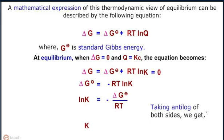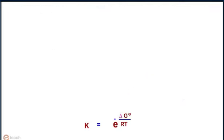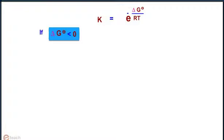Taking anti-log of both sides, we get K equals e to the power minus delta G° upon RT. If delta G° is less than zero, minus delta G° upon RT is greater than zero. This implies that e to the power minus delta G° upon RT is greater than 1.